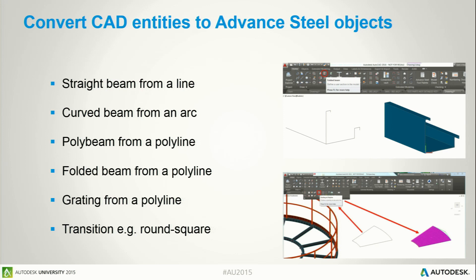There are some ways also to create grating. We have a complete catalog of international gratings available in Advanced Steel. They can be rectangular, circular, or polygonal. But when it's a complex shape, you can first create a polyline and convert it to a grating. We also have the possibility to create a rectangle and a circle, and create a transition — a square-round transition between the rectangle and the circle.